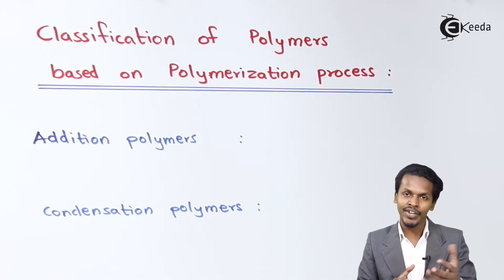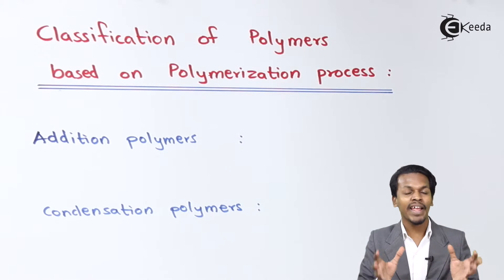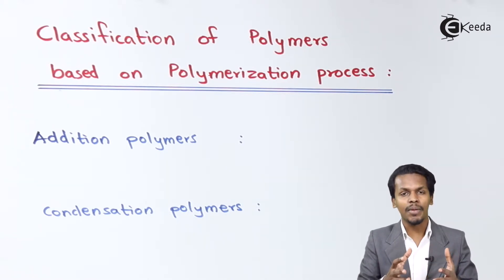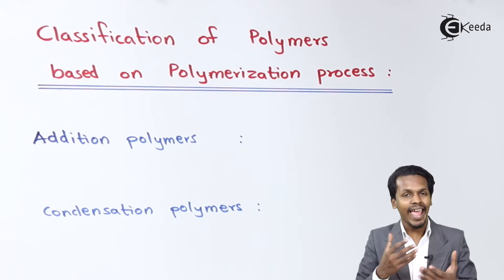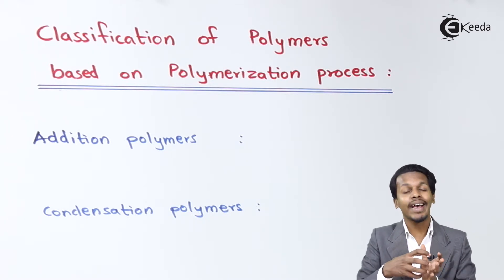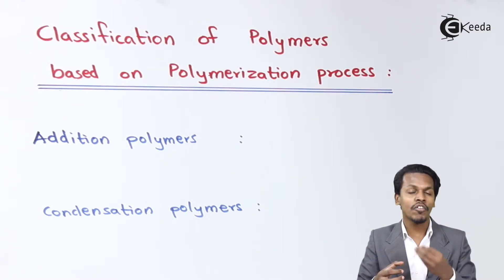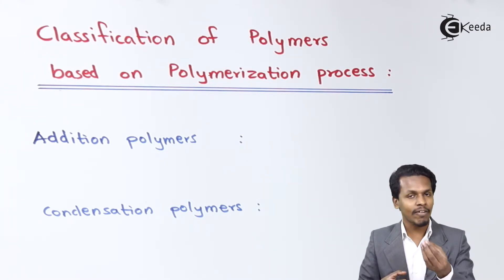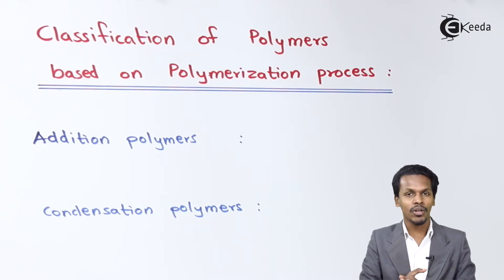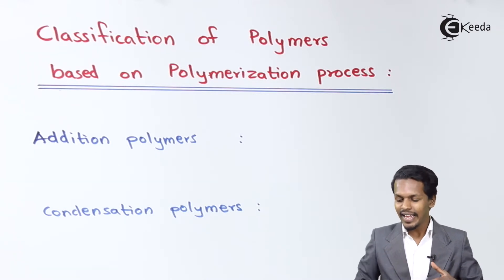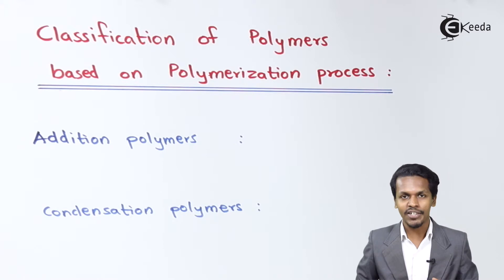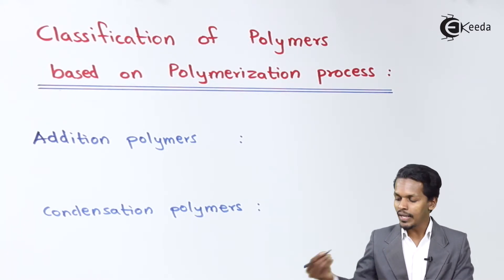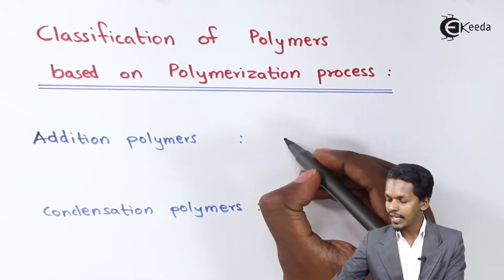Addition polymers are the polymers that have been obtained from alkanes or the derivatives of alkane by the addition reaction method. In this case the total number of atoms remains as it is, and therefore there will be no elimination of small molecules like water or ethanol. That is the reason this is a kind of polymer obtained by the addition reaction.